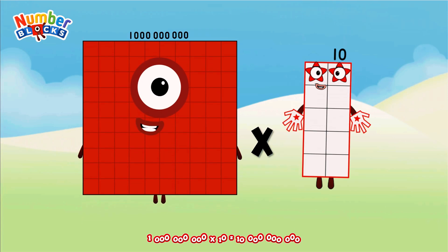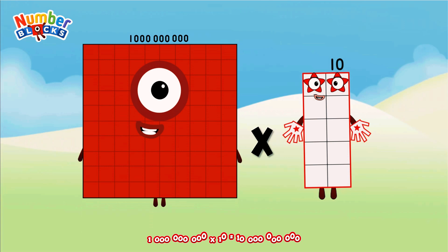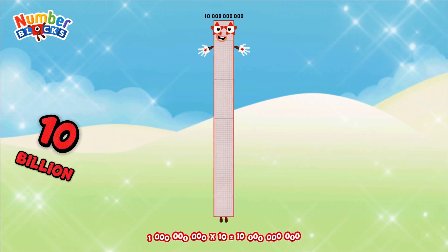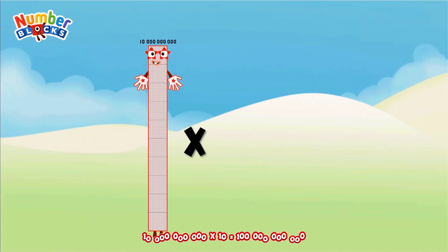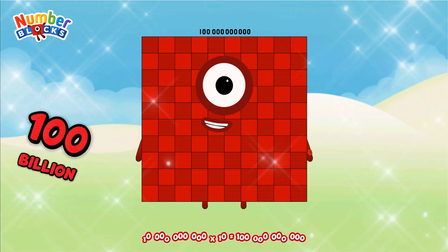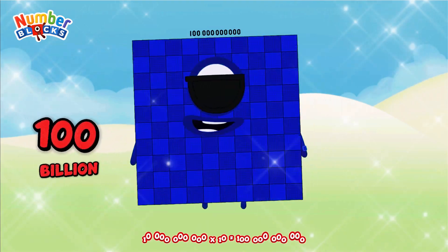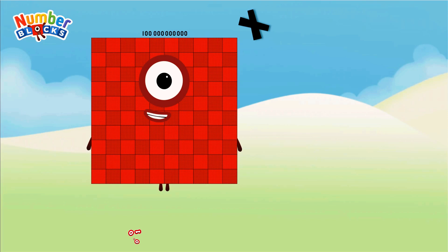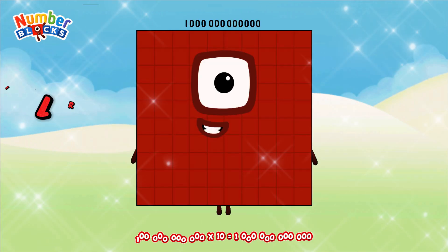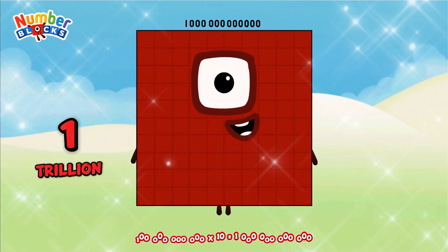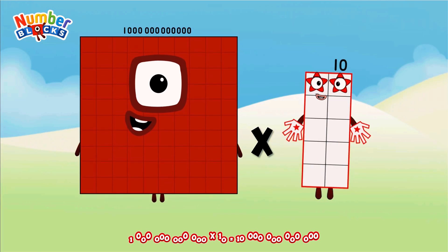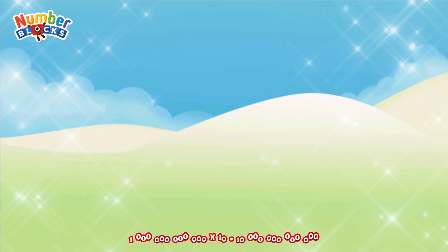1 billion multiplied by 10 equals 10 billion. 10 billion multiplied by 10 equals 100 billion. 100 billion multiplied by 10 equals 1 trillion. 1 trillion multiplied by 10 equals 10 trillion.